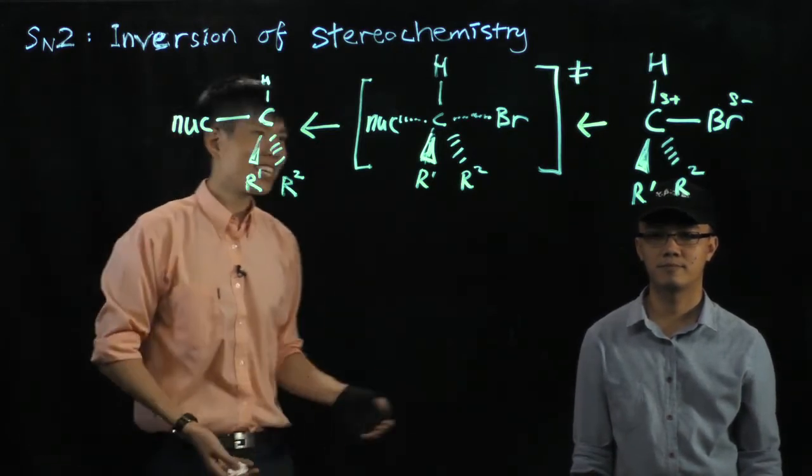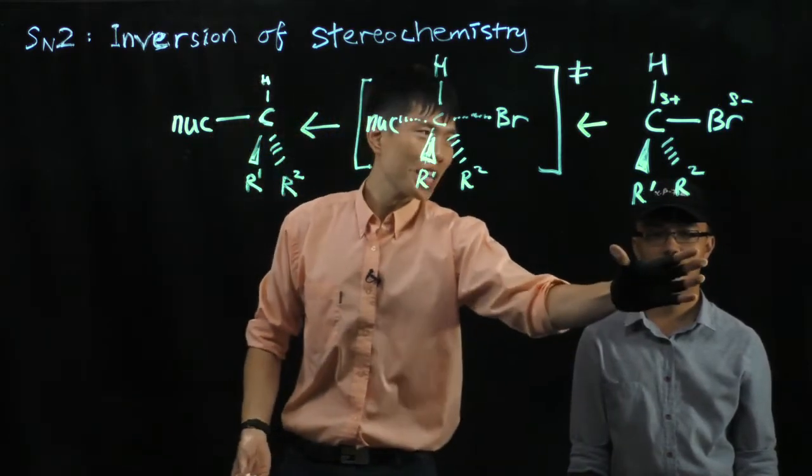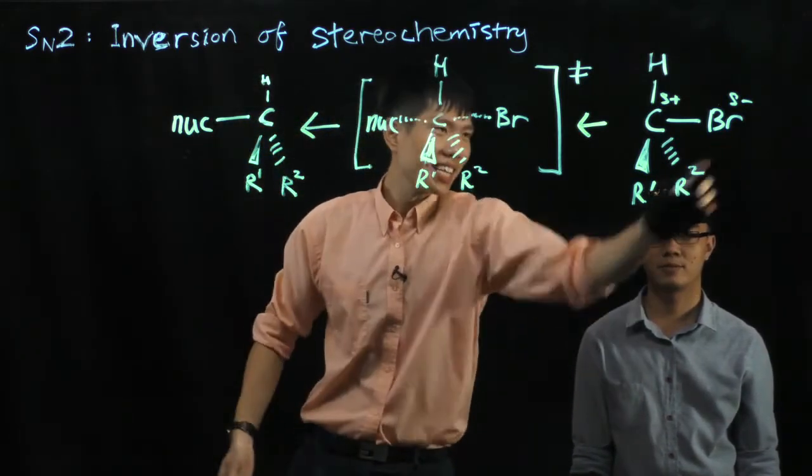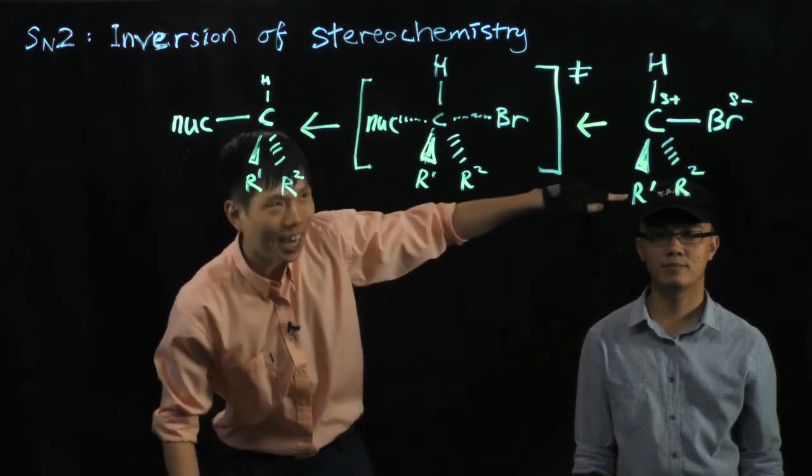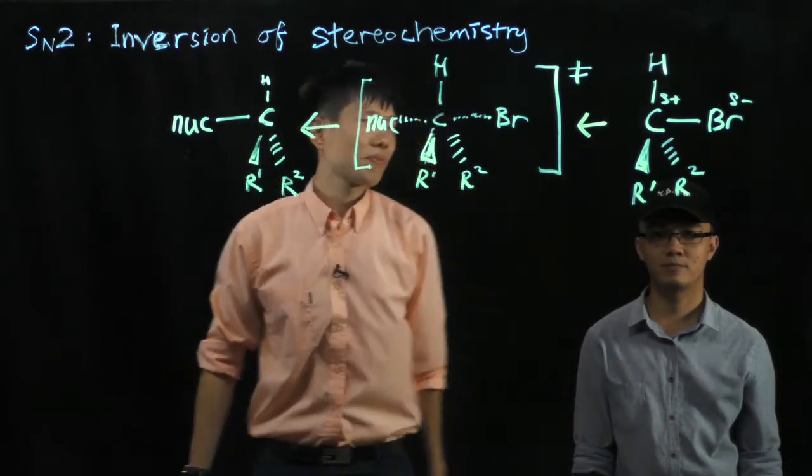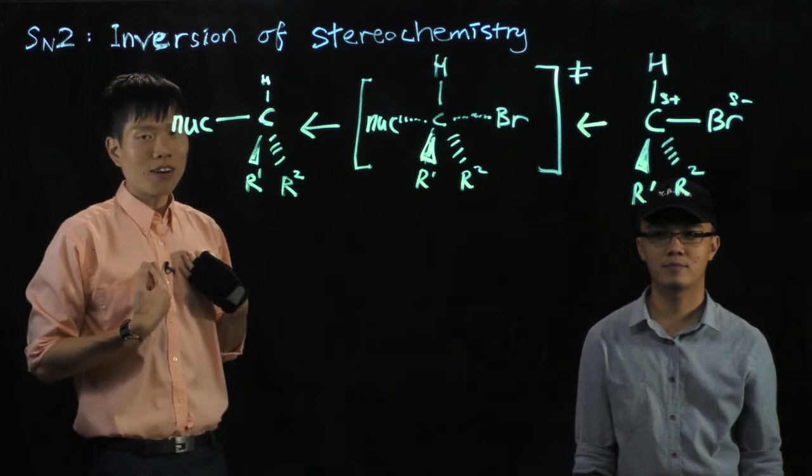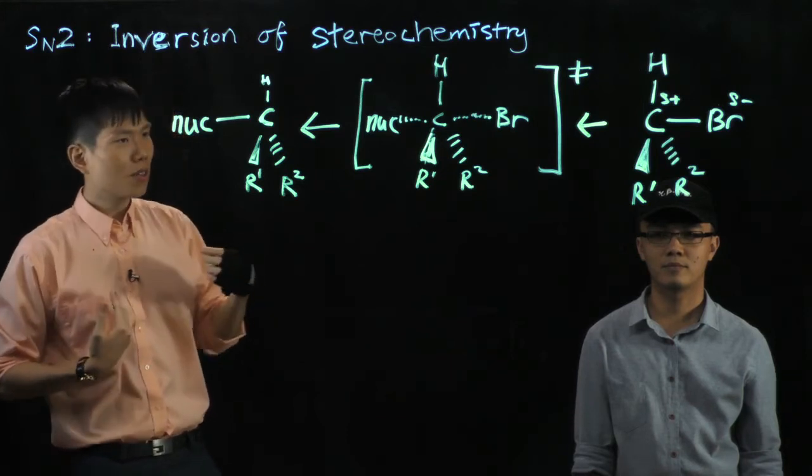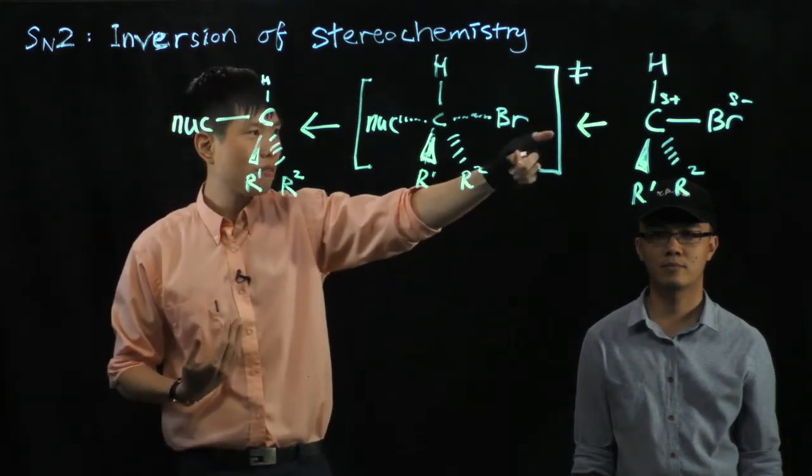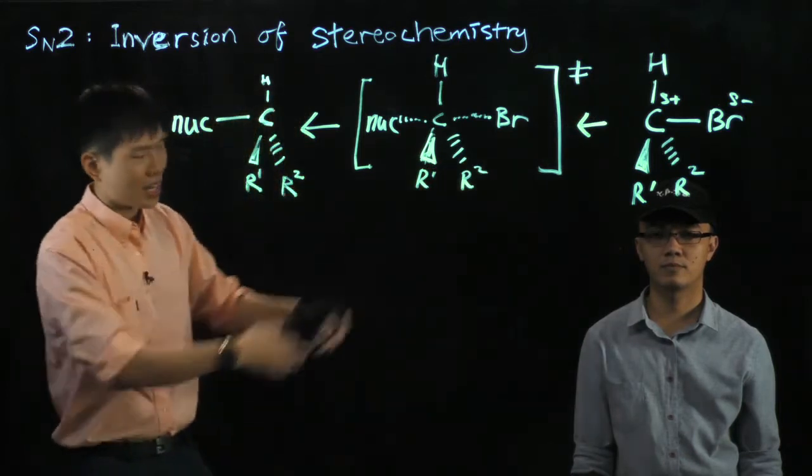So my friend here, Ying Xing, imagine he is the substrate and he is the bromide. The cap that he is wearing right now represents this fragment here. I am the nucleophile and I am supposed to be connected to the cap which represents the R group that he is on.